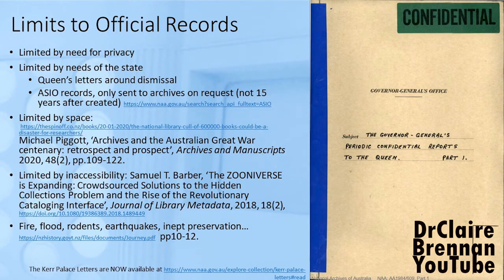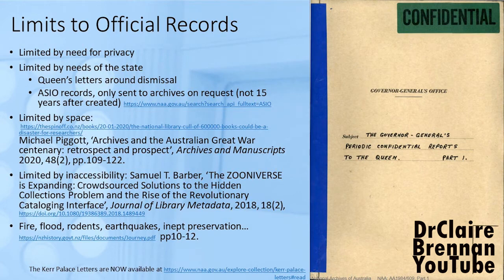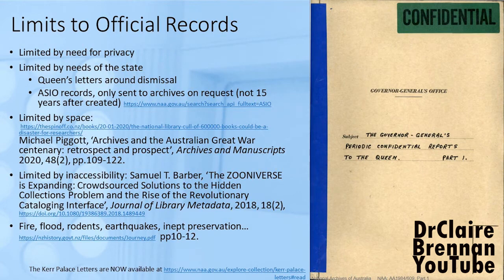Similarly, ASIO records — records of Australia's Secret Service — are only released on request and only after 31 years has elapsed. They're not automatically released and not necessarily released in full; they go through a process of being redacted, so information considered still sensitive is blacked out and made unavailable to researchers. Official records are also limited because they take up space. Various repositories have gone through culls and destroyed sections of their records simply because they don't have the space to keep them.